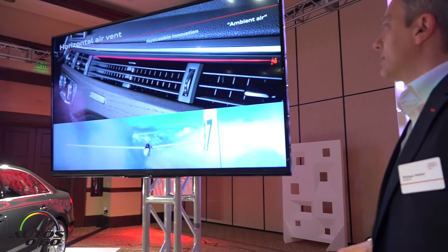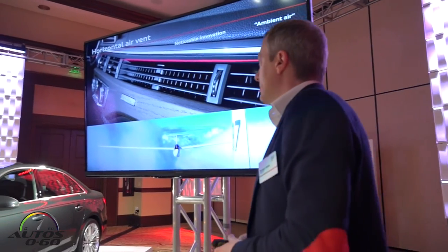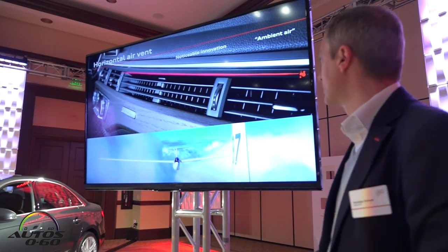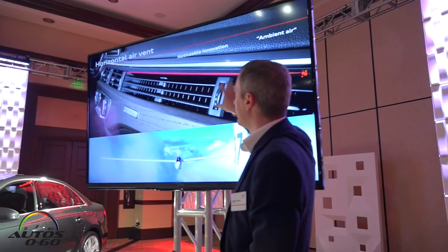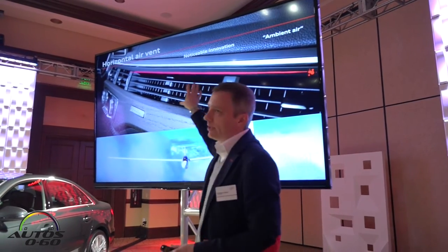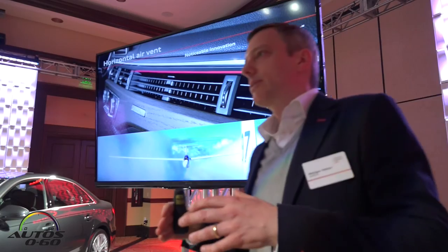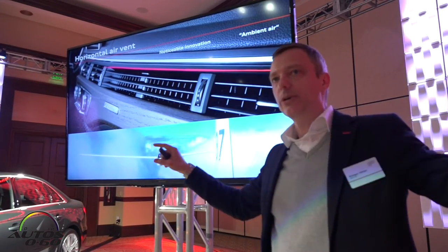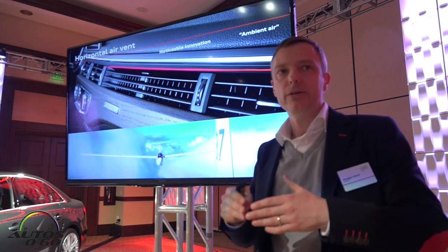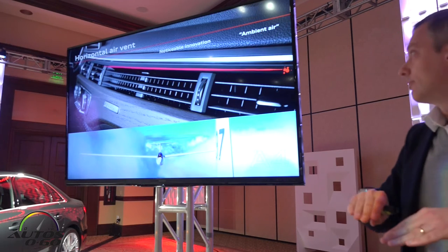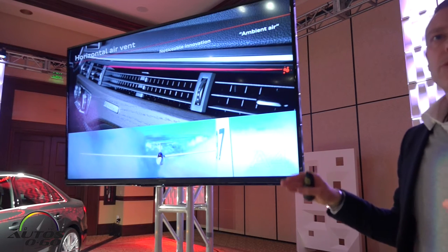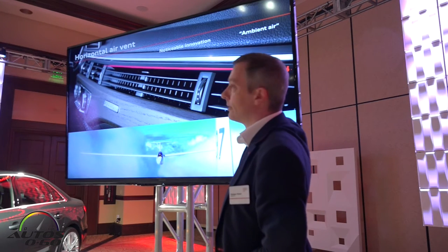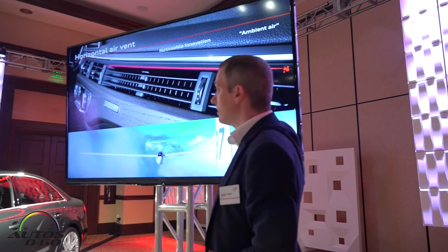The horizontal layout's definitive noticeable innovation is the ambient air vent on the passenger side. You have the regular air vents on the right and in the center, but in between you have this ambient air that basically extends the design of the air vents all the way across the dashboard. That's how we create the smooth, wide look of the dashboard — the section is really slim and this look runs all the way through rather than sitting as an island.